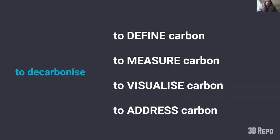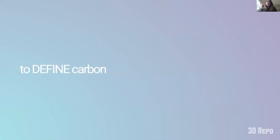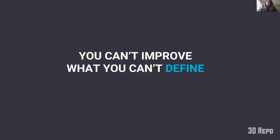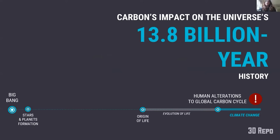We're becoming more familiar with the word 'decarbonize' — reducing or removing carbon dioxide output into the atmosphere. I want us to think about it not just as a verb but as an objective and a goal. The agenda for today: I'll start by defining carbon, then talk about why we need to measure it, how we can visualize it, and how we can address it. We cannot improve what we cannot define — so let's start defining.